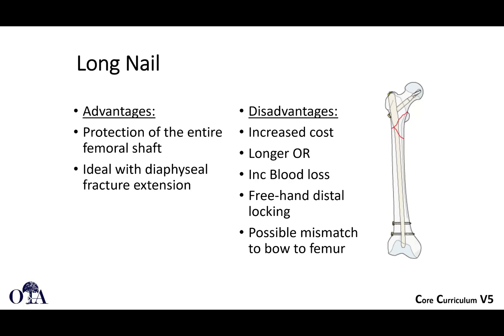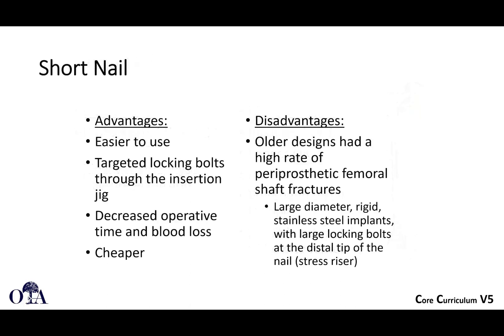Regarding long nails: use one when you need to protect the entire femoral shaft or when there is fracture with diaphyseal extension. Disadvantages include slightly increased cost, increased operative time for distal interlocking and canal reaming, and risk of anterior cortex perforation distally if the nail's radius of curvature doesn't match the patient's femoral bow, especially in osteoporotic bone.